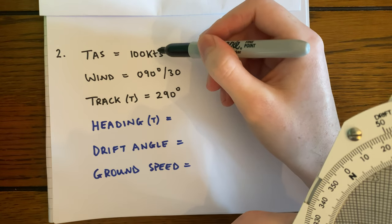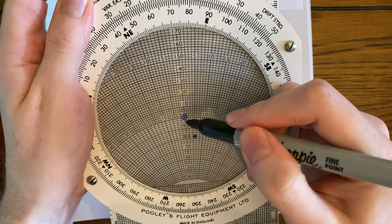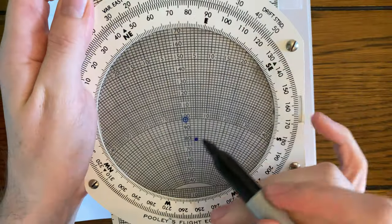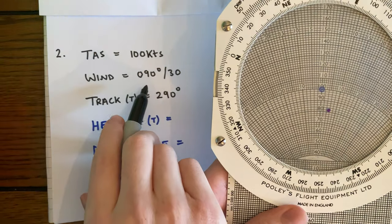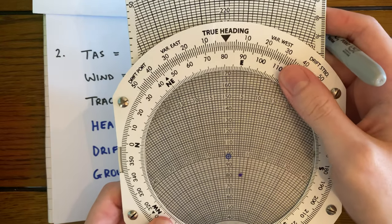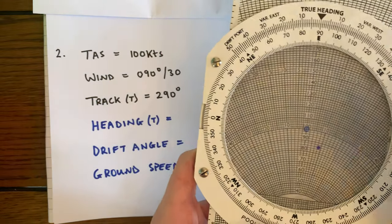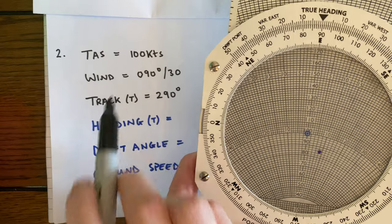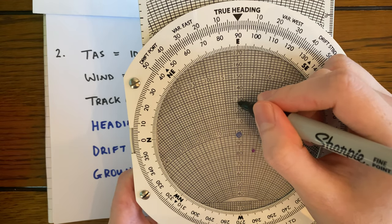So again, we'll start with our TAS—it's 100 knots. What we do is plot our blue center point with our TAS of 100 knots. Now we want to set our wind—090. So we'll turn our dial to show 090 at the top, and we're going to mark up 30 knots from 100 knots. So there's up 30.